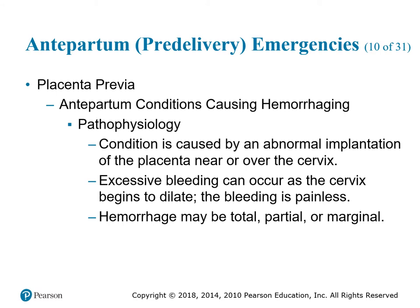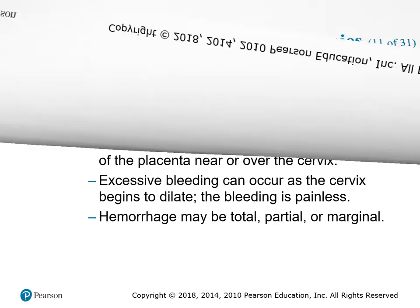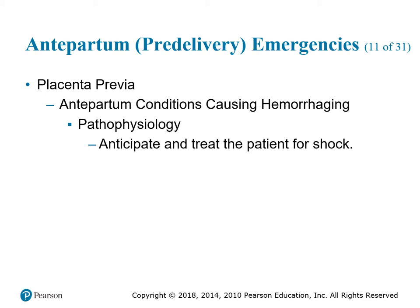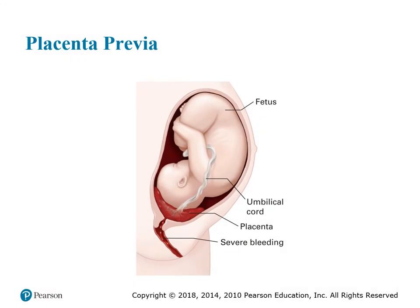Placenta previa is caused by abnormal implantation of the placenta near or over the cervix itself. Excessive bleeding may occur as the cervix begins to dilate, and the bleeding is painless. Hemorrhage may be total, partial, or marginal. Anticipate treating the patient for shock. In the diagram, the placenta is developing right next to the cervix — as the cervix dilates, it may cause rupture of the blood vessels that attach from the placenta to the uterus.